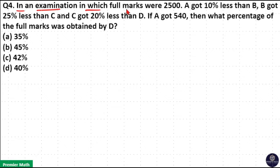In an examination in which full marks were 2500, A got 10% less than B, B got 25% less than C, C got 20% less than D. If A got 540 marks, then what percentage of the full marks was obtained by D?